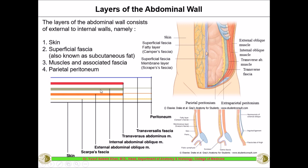The three muscular layers are: external oblique, internal oblique, and transversus abdominis. Deep to the muscles is a fascia called the fascia transversalis, which separates the abdominal contents and peritoneum from the muscles. Deep to that is the peritoneum, and then all the organs deep inside. So from outside to inside: skin, superficial fascia with two layers (Camper's and Scarpa's fascia), three muscular layers, then transversalis fascia, and finally the peritoneum.